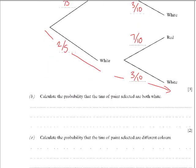When we go along a tree diagram we multiply. So this would be 2 fifths times 3 tenths, which gives us an answer of 6 over 50.